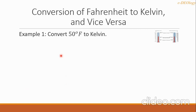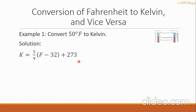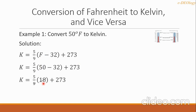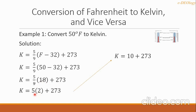Example one: convert 50 degrees Fahrenheit to Kelvin. We substitute 50 for the F variable. Simplifying, 50 minus 32 becomes 18; we cancel 18 and 9 to get 2, then multiply 5 times 2 to get 10. Adding 273, the answer is 283. The final answer is 283 Kelvin.